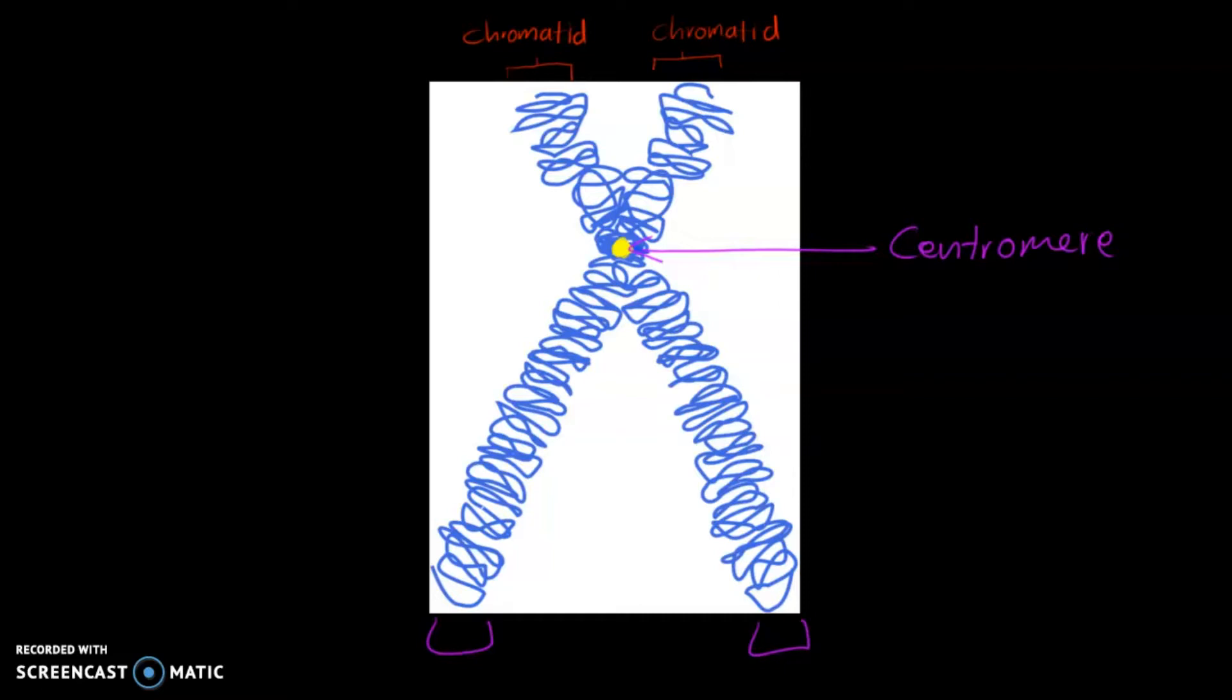The centromere has two major functions. One is joining the sister chromatids. These two sister chromatids here must stay joined together until it's time for them to be physically pulled into the two future daughter cells.